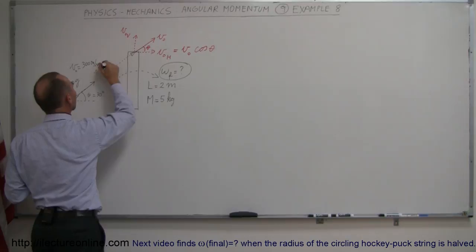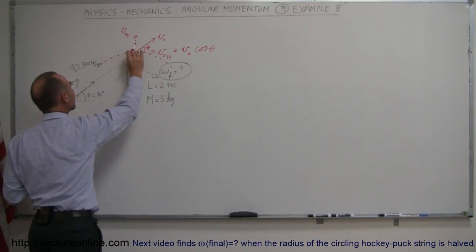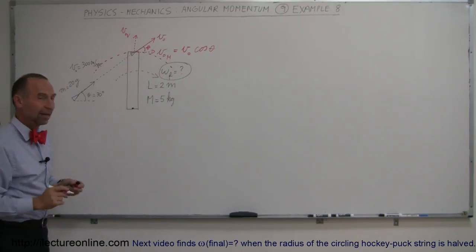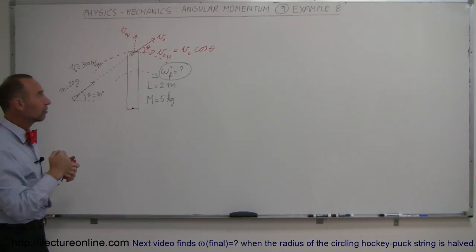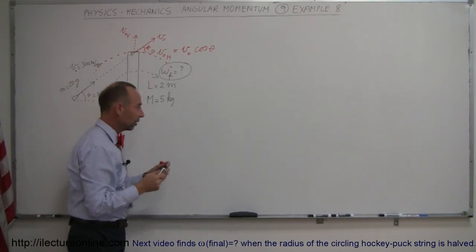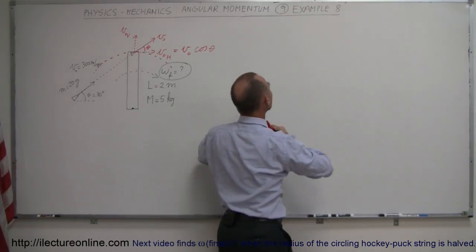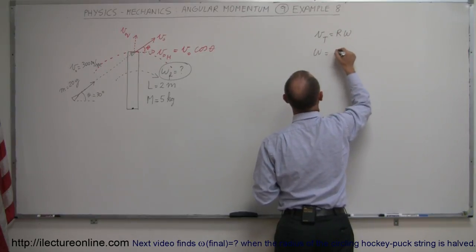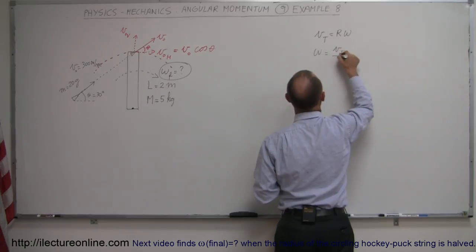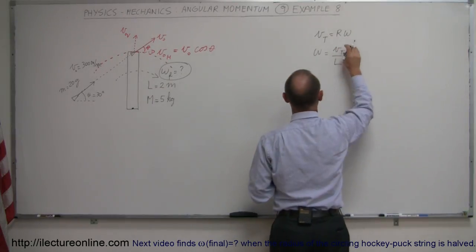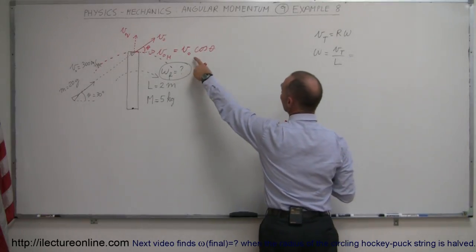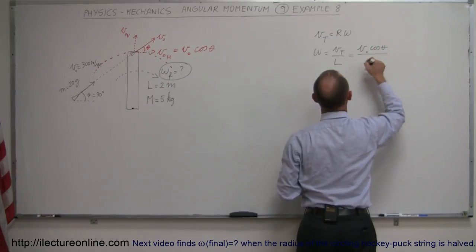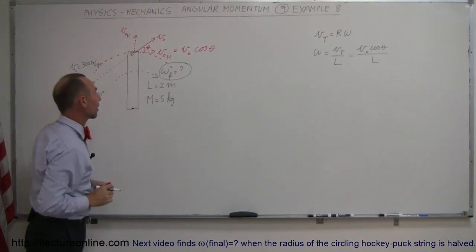That component acts as if it came in along the tangent of the circular path with radius l equal to 2 meters. We need to find the equivalent angular velocity of the bullet as it strikes the beam at that point — it stops; it doesn't pass all the way through. Tangential velocity equals r times omega, so angular velocity equals tangential velocity divided by the radius, which in this case is the length of the beam. The tangential velocity is v-initial times cosine of theta, so the equivalent angular velocity of the bullet when it strikes is v-initial times cosine of theta divided by l.